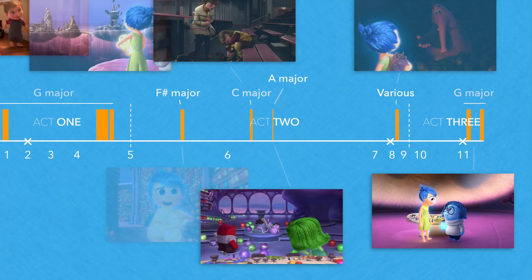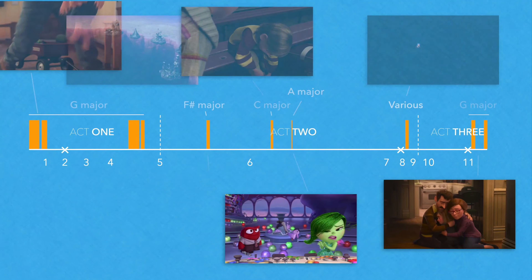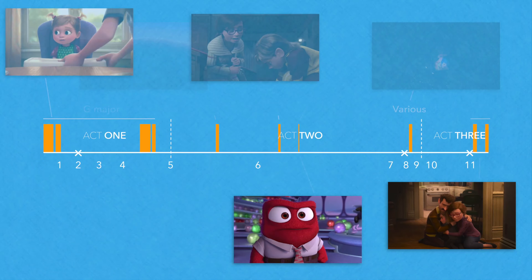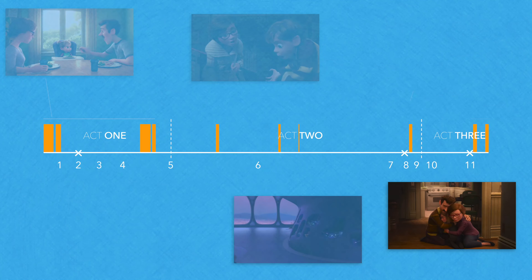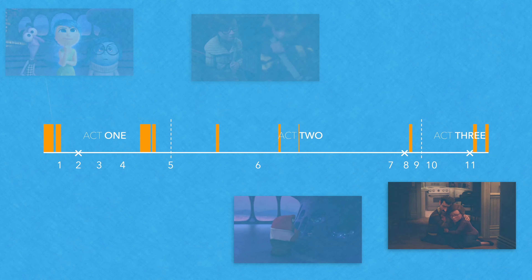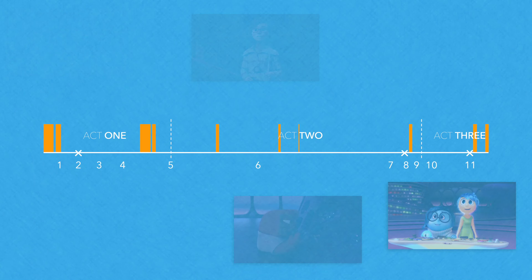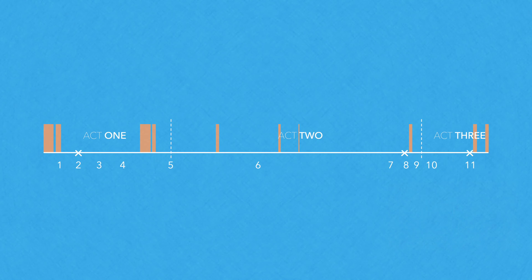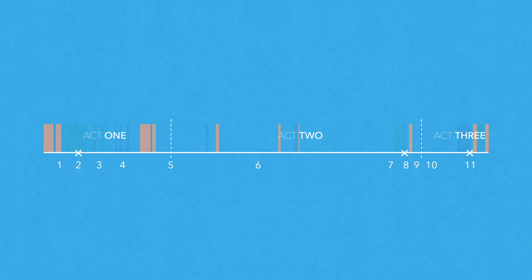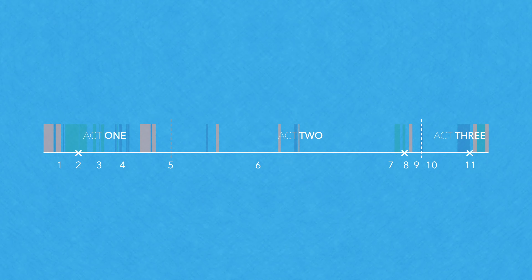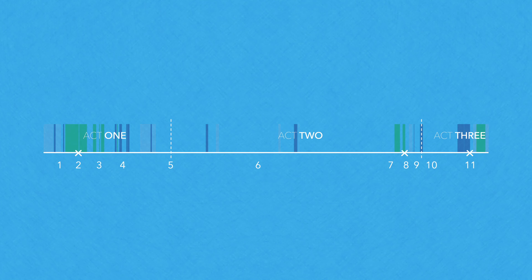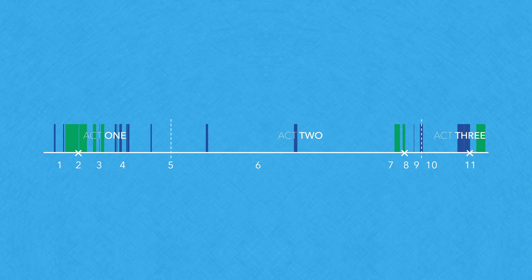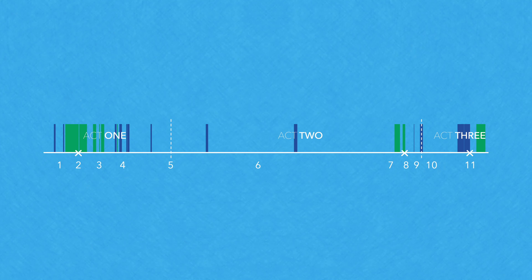Although this idea begins and ends Inside Out, its near lack of transformation over the course of the story suggests a returning to a previous state instead of a development. So instead, it's left to the other primary ideas — the secondary theme and Sadness' theme — to provide the emotional weight in the score.